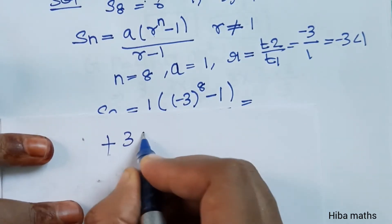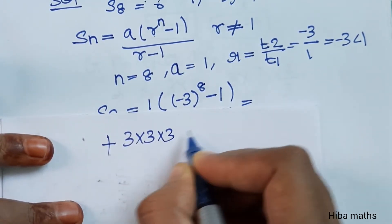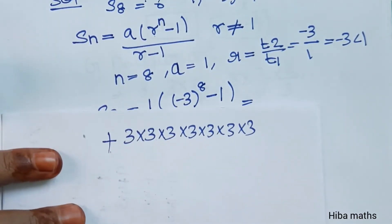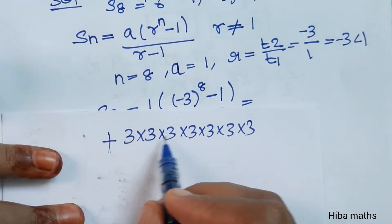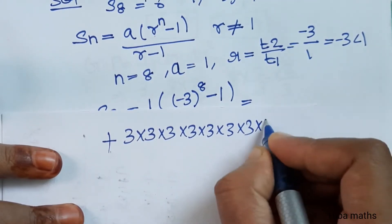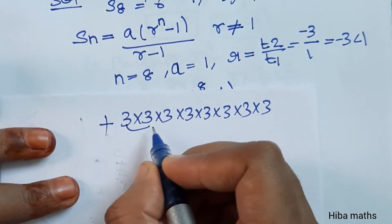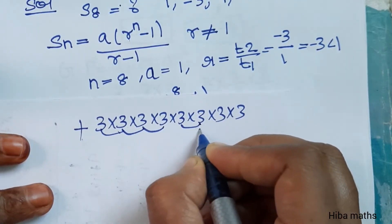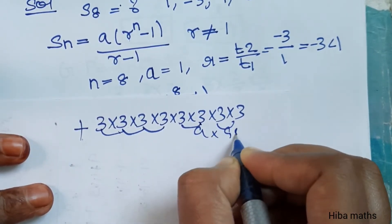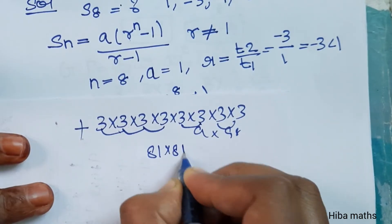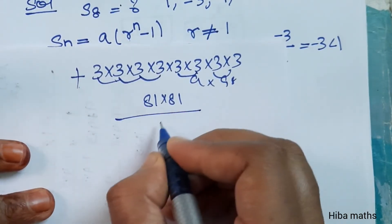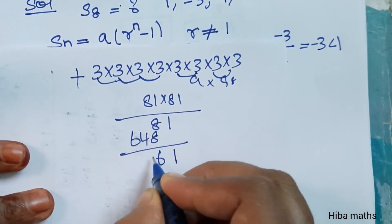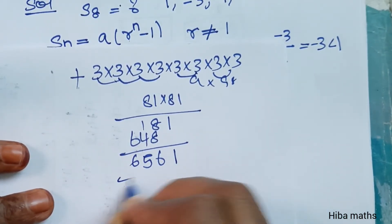Now we calculate 3 power 8: 3 × 3 × 3 × 3 × 3 × 3 × 3 × 3. That is 9 × 9 × 9 × 9, which equals 81 × 81, giving us 6561.